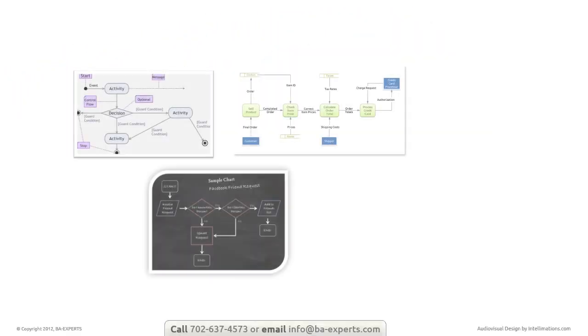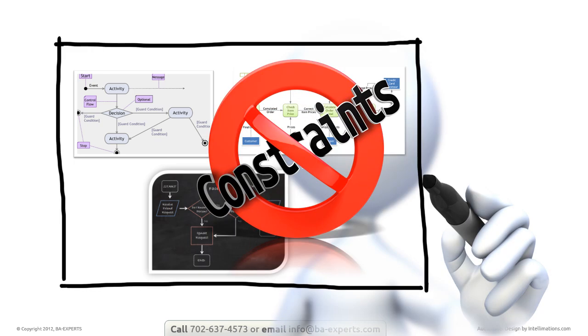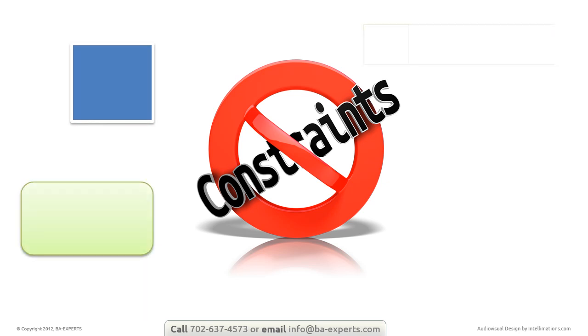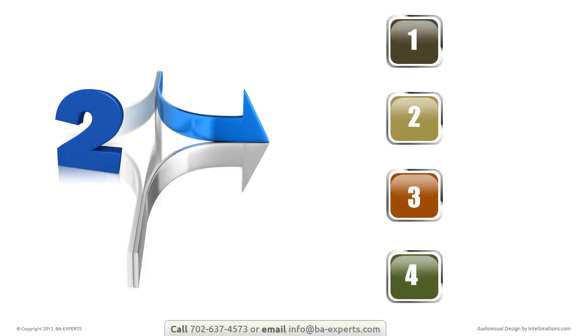Fundamentally, any diagram is simply a picture with constraints. In the case of the DFD, the constraints are which symbols you can use and what each symbol means. There are really only two widely used conventions, and the differences are minimal. Both allow only four basic symbols.